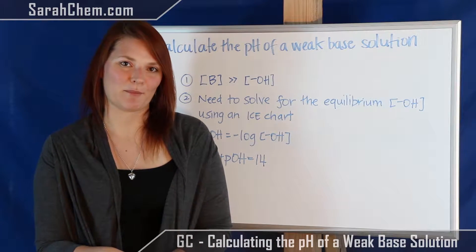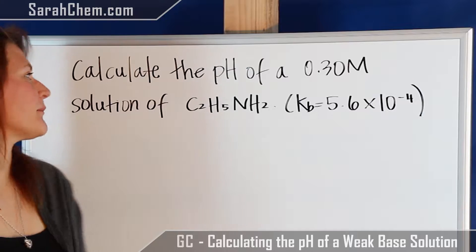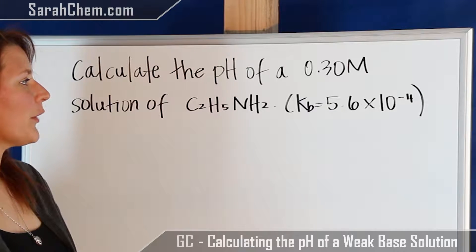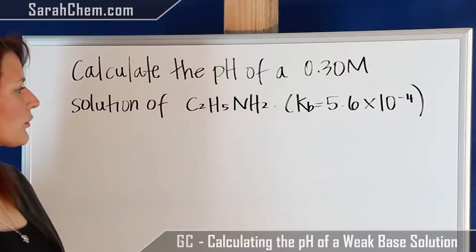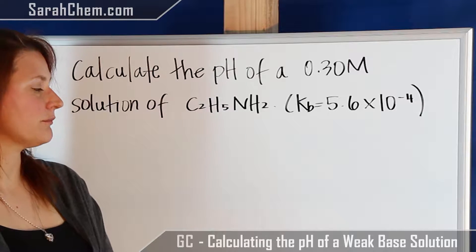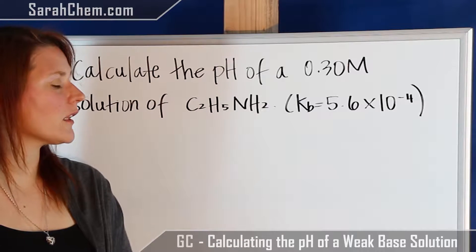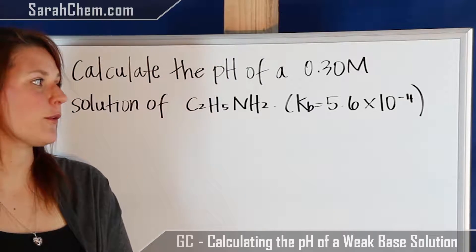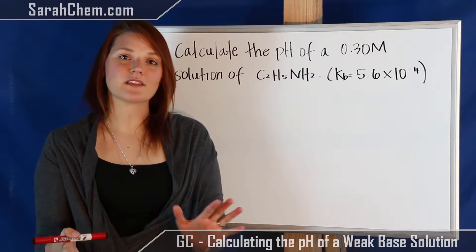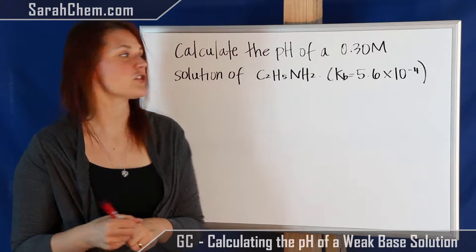So now let's take a look at the example. The problem says: calculate the pH of a 0.30 molar solution of C2H5NH2, with a Kb value given as well of 5.6 times 10 to the minus 4. At the beginning of these kinds of questions, you want to pull out the important pieces of information.